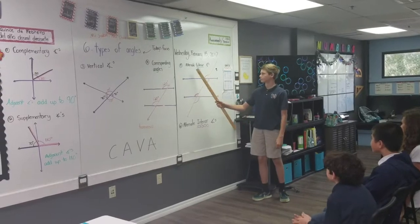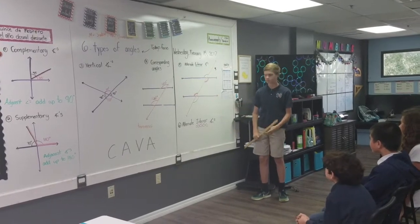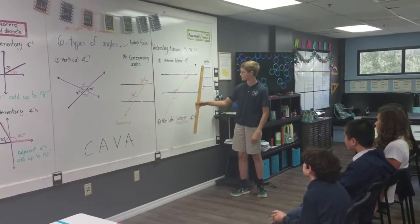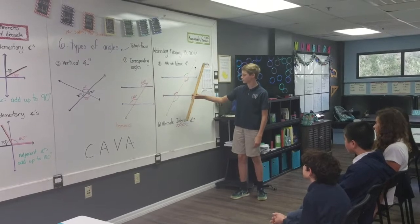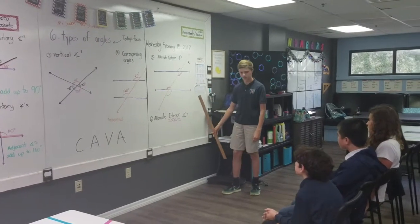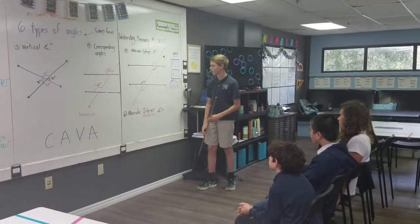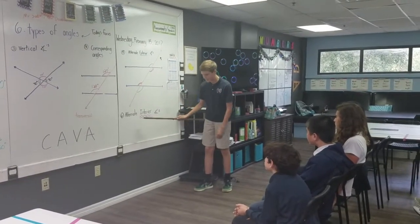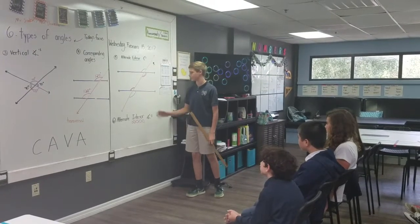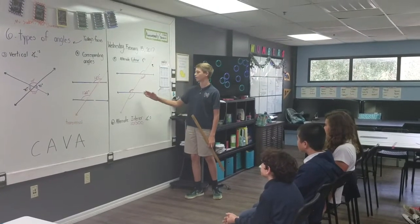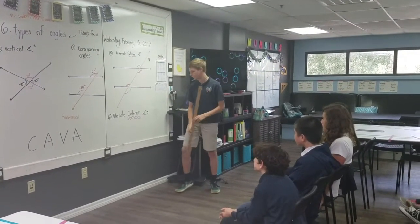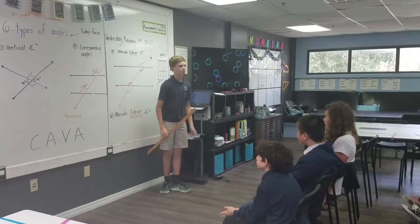Alternate exterior angles are on the outside of the parallel lines and on the opposite ends of the transversal line. Alternate interior angles are on the inside of the parallel lines and are also on opposite ends of the transversal line.